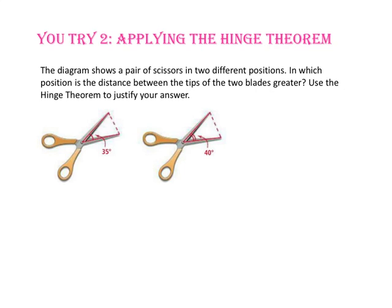Pause the video and do U-try number 2. The diagram shows a pair of scissors in two different positions. In which position is the distance between the tips of the blades greater? Use the hinge theorem to justify your answer. Since the length of the blades stays the same and the only thing that changes is the angle measure between the blades, the distance between the blades where the angle is 40 degrees is going to be longer than the distance between the blades where the angle measure is 35.